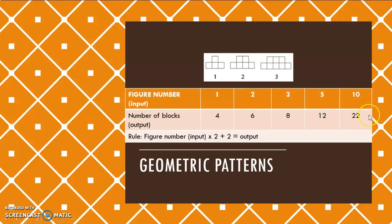If they, for instance, now gave me the output value here, let's say 42, and they want to know the figure number, then I need to go and do this one in reverse, my inverse operations. So, as you know, usually we multiply first, and then we add. But since we are doing it in reverse, I do it in the opposite way.